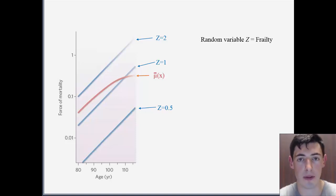On the blue lines, we observe the force of mortality for the different subpopulations, each of which have different age-specific mortality rates.